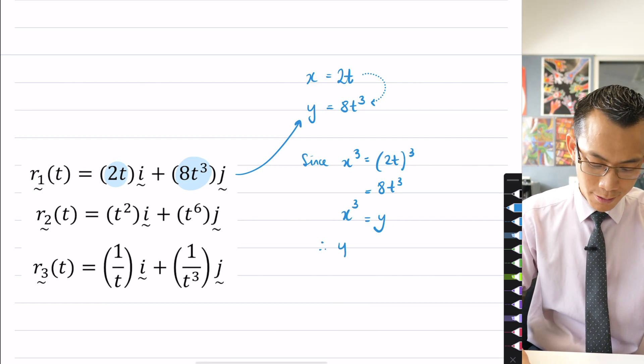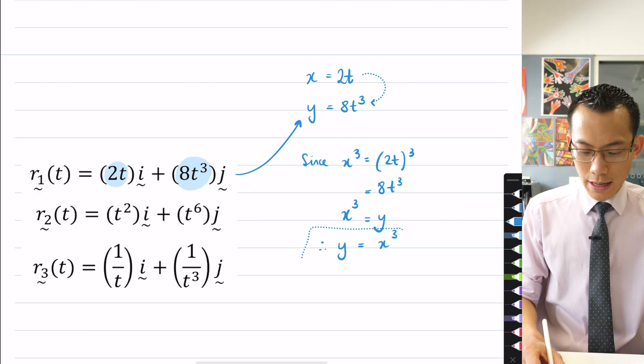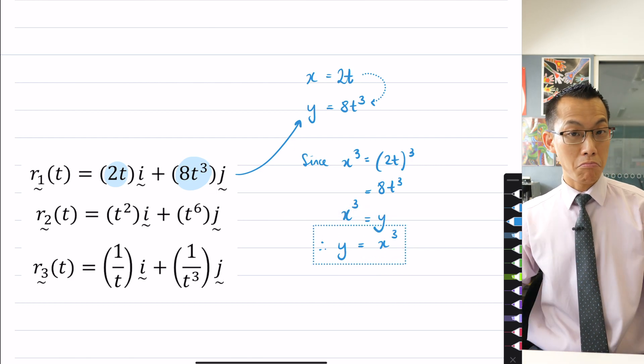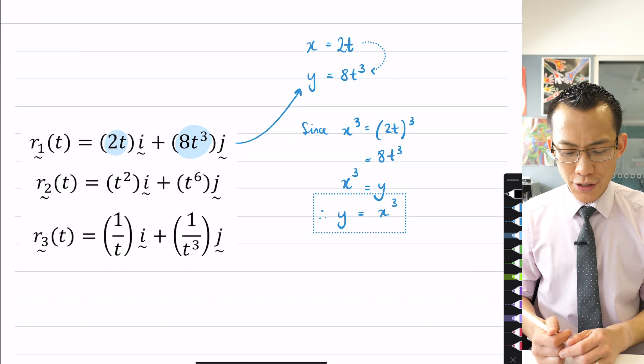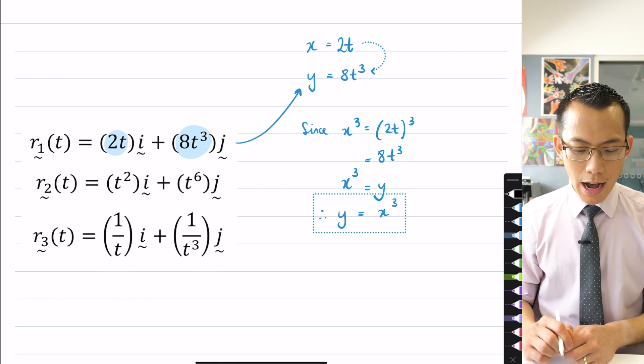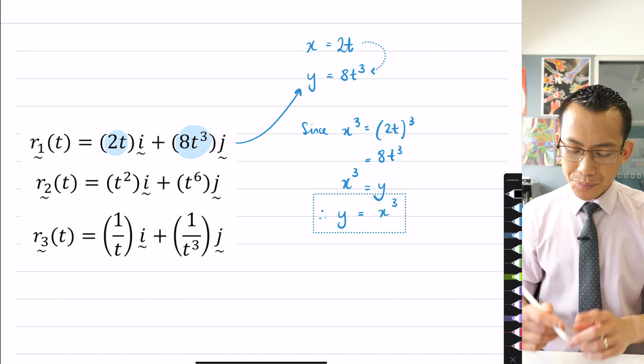I've got my Cartesian equation right there. When we were used to y being the subject, so I'll just write it like so. That's all that you're being asked for when they say find the Cartesian equation: y equals x³, you're done. But then I have to go a bit further and say, what is the difference in the domains of these?